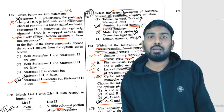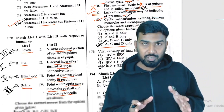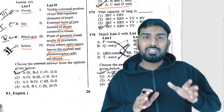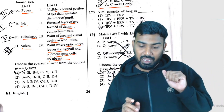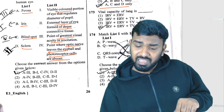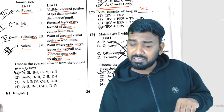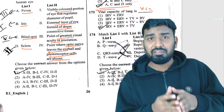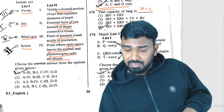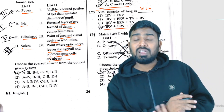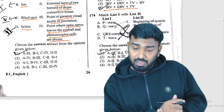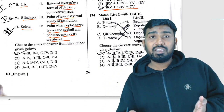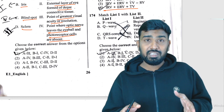Question 173 is about lung volumes and capacities. Vital capacity (VC) is the combination of tidal volume (TV), inspiratory reserve volume (IRV), and expiratory reserve volume (ERV). This is the correct answer.